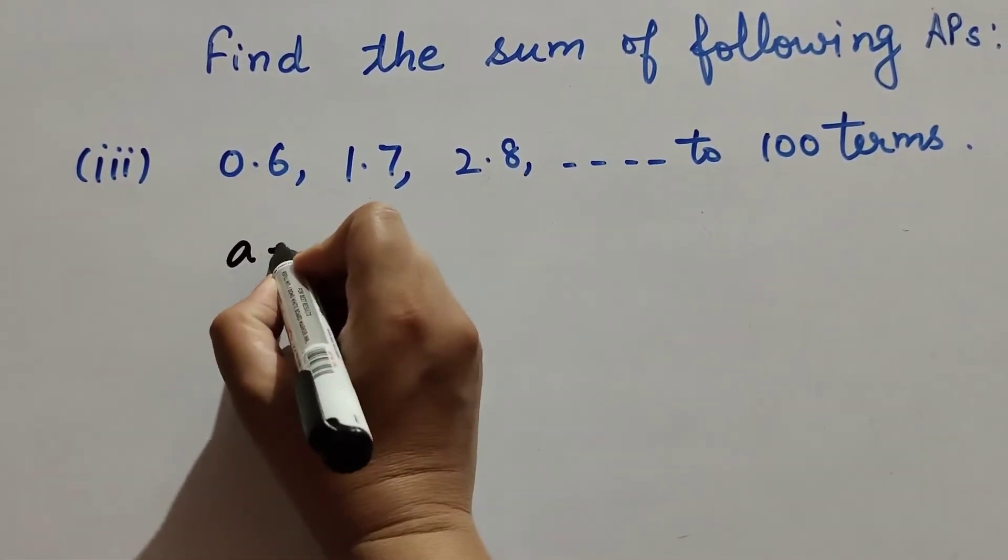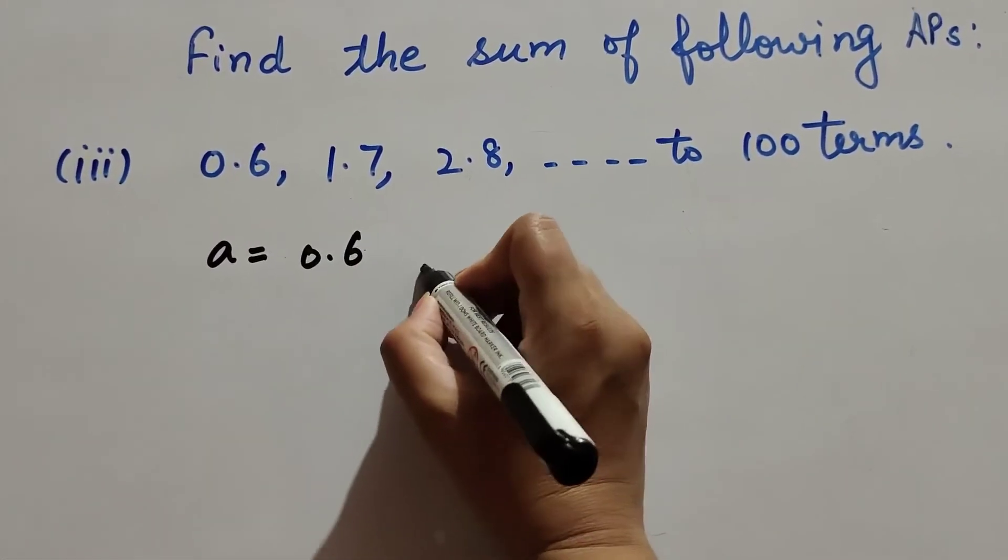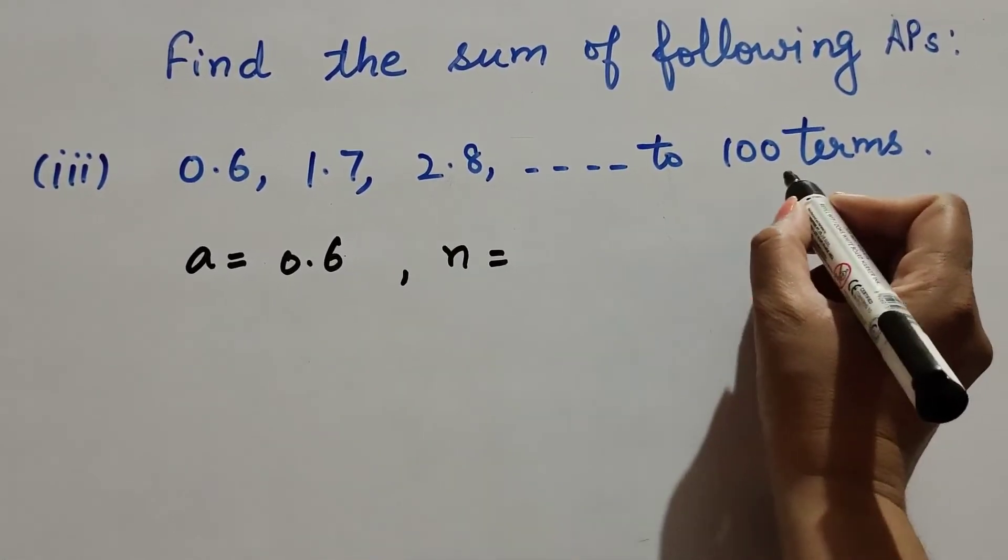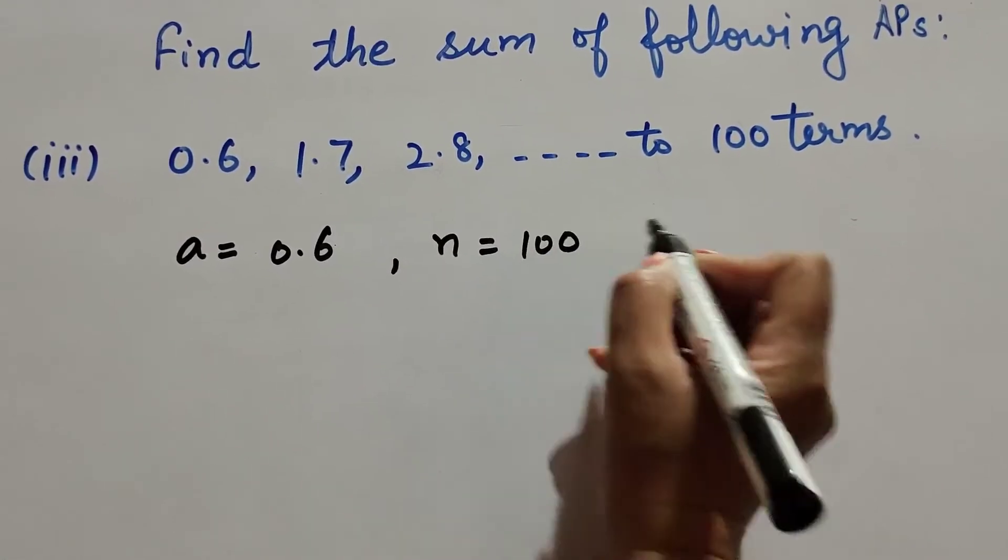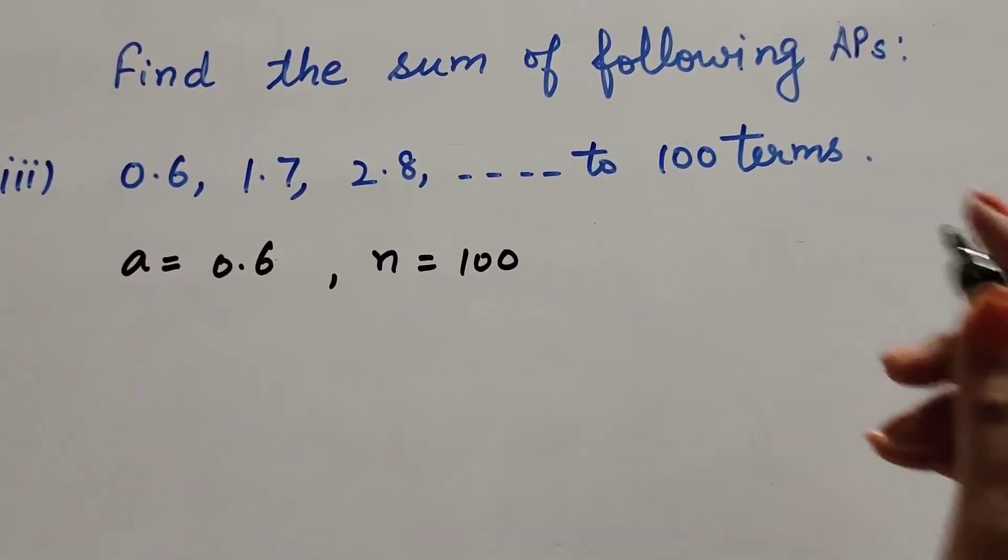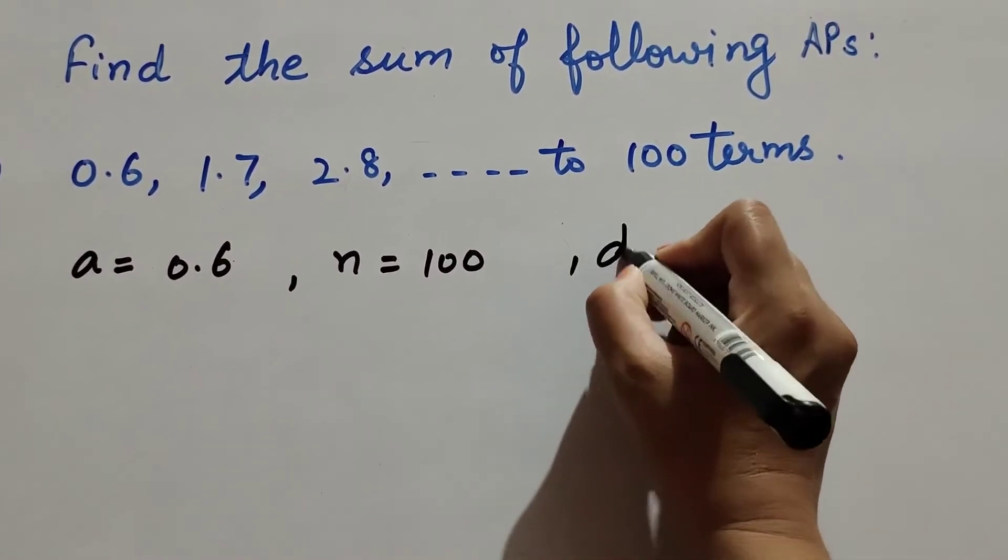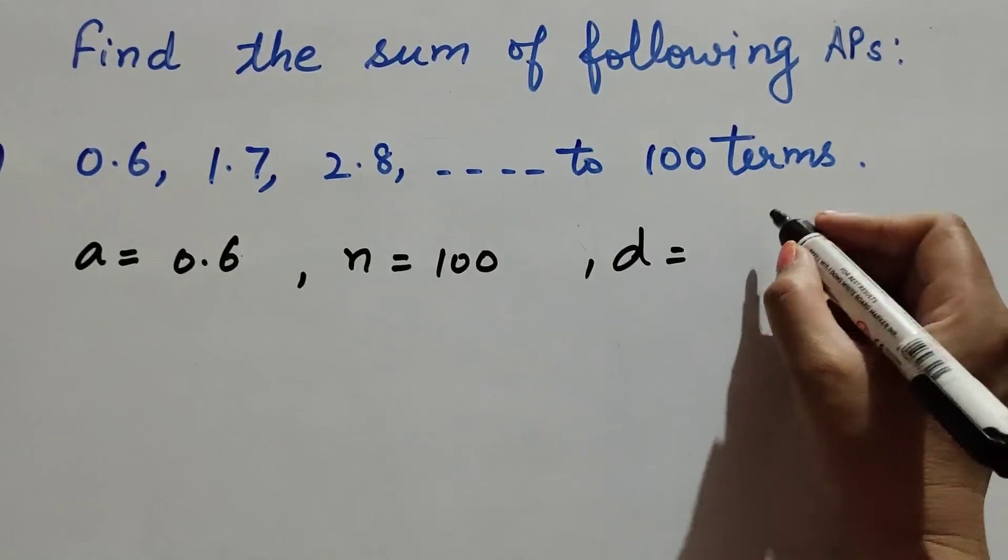In this, the first term is given, it is equal to 0.6, and we find the sum of 100 terms. So n is equal to 100 and common difference d is equal to second term minus first term.